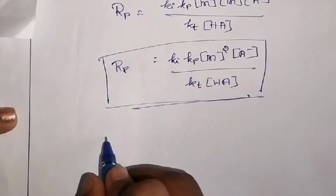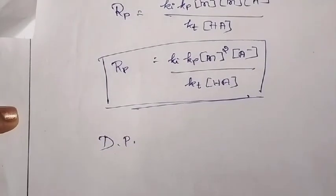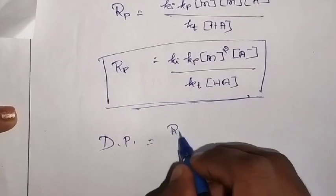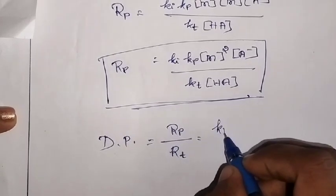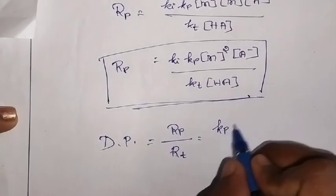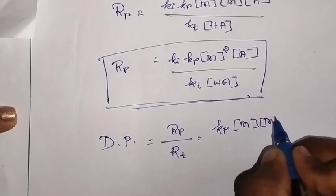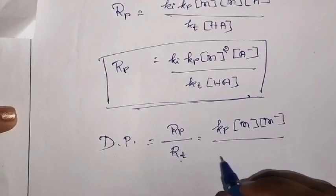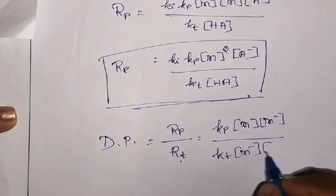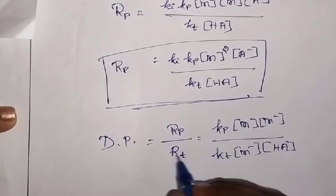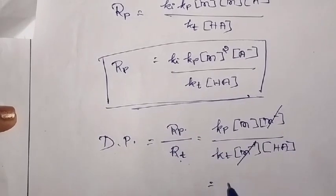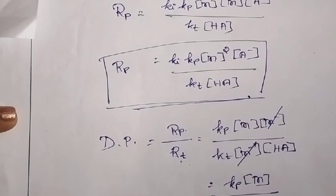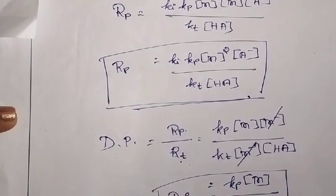You can also write the equation for DP — the degree of polymerization — which is given by the rate of propagation divided by the rate of termination. Substituting from equations 2 and 3: DP = Kp[M][M⁻] / KT[M⁻][HA]. The [M⁻] terms cancel, giving DP = Kp[M] / KT[HA]. This is the degree of polymerization for anionic polymerization.